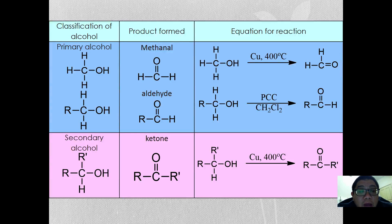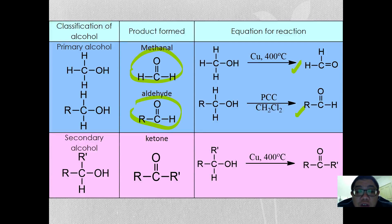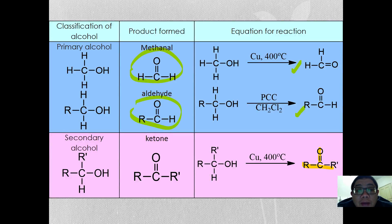For primary alcohol using copper or PCC, you form methanal or an aldehyde, and the aldehyde will not be further oxidized to carboxylic acid. For secondary alcohol using copper at 400°C, you still form a ketone and it will not form anything else. These are the general equations for the controlled oxidation reactions.